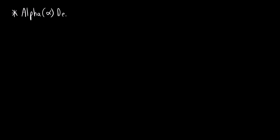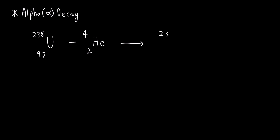Let us first talk about alpha decay. Alpha decay is the loss of an alpha particle. For example, uranium has atomic mass 238 and atomic number 92. The alpha particle is a helium nucleus with atomic number 2 and mass number 4. So the atomic mass becomes 238 minus 4, which is 234, and 92 minus 2 gives 90. This species is thorium.